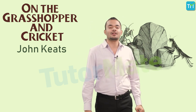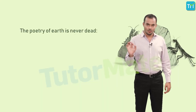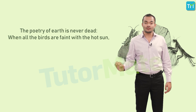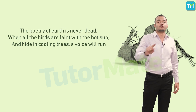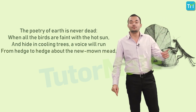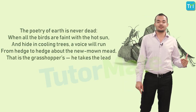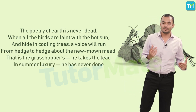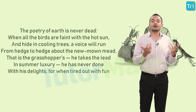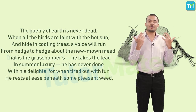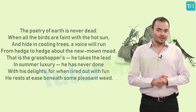Let's read the poem again to understand a bit more: 'The poetry of earth is never dead. When all the birds are faint with the hot sun and hide in cooling trees, a voice will run from hedge to hedge about the new-mown mead — that is the grasshopper's. He takes the lead in summer luxury. He has never done with his delights, for when tired out with fun he rests at ease beneath some pleasant weed.'